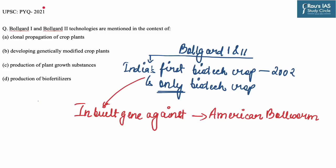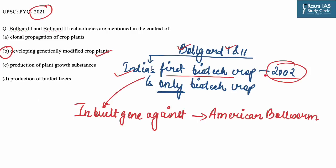This article is also important because questions related to biotechnology frequently appear in the examination. For example, in 2020-21, a question appeared: Volgaard 1 and Volgaard 2 technologies are mentioned in the context of — the answer is B — developing genetically modified crop plants. Volgaard 1 and 2 relate to India's first biotech crop approved for commercialization in 2002, also the only biotech crop commercially grown in India. It has an inbuilt gene against the destructive American boll weevil.